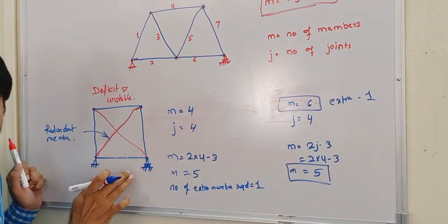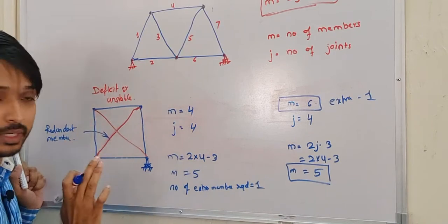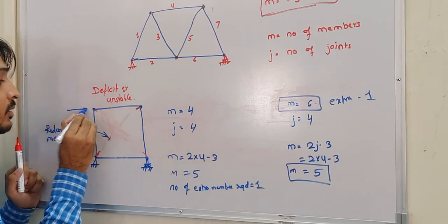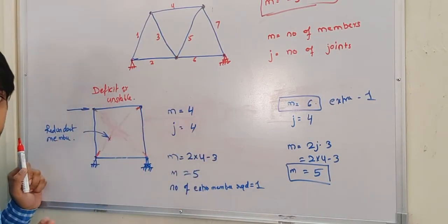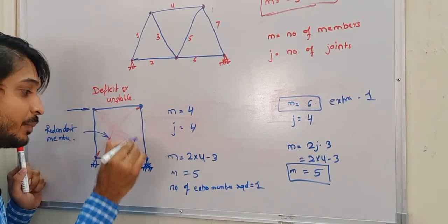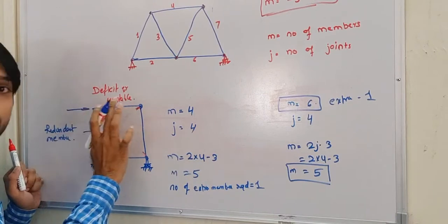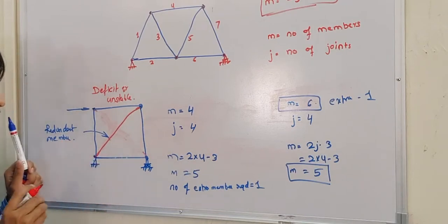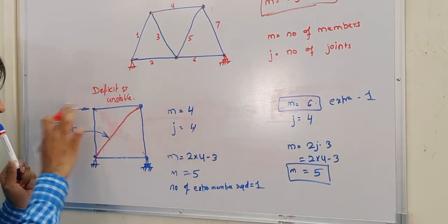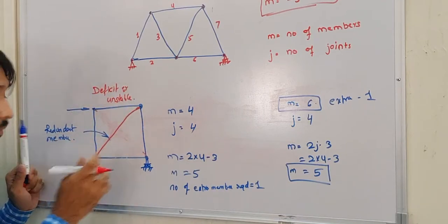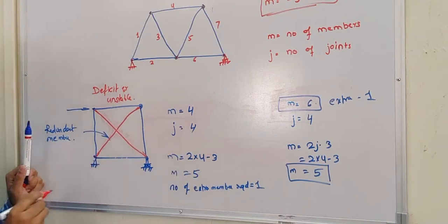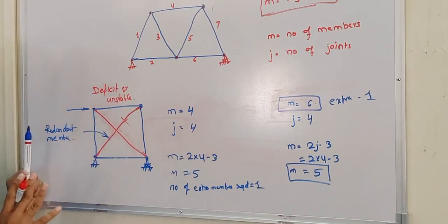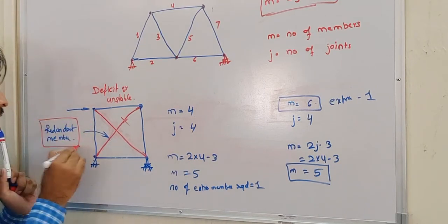We always prefer redundant structures over unstable ones. If an unstable structure has any load applied, it will tilt and fall because all joints are only pinned. With one extra member added, it holds and carries the load. Even if one member fails, the redundant member helps the structure hold — that is why redundant members are preferred.